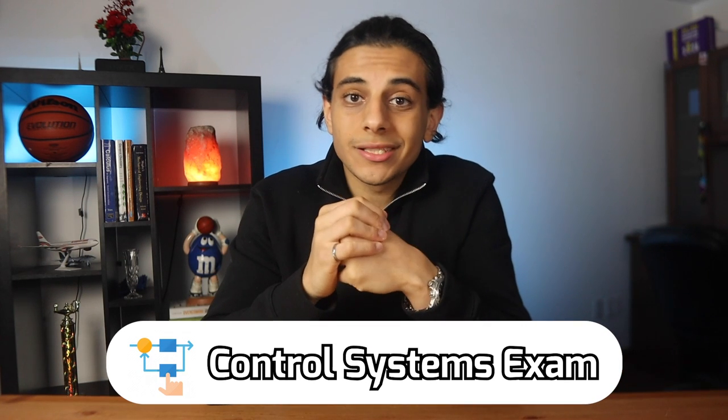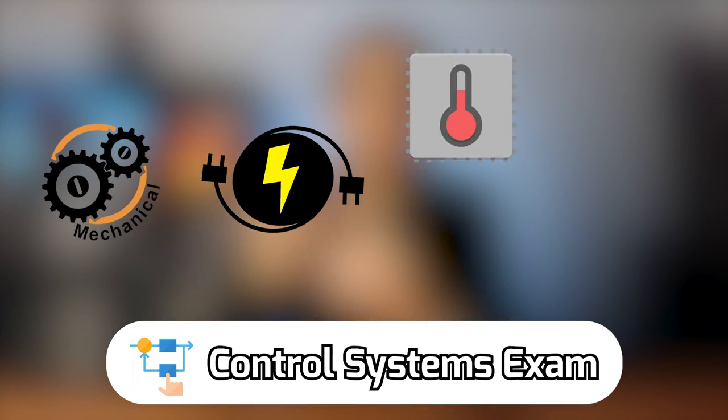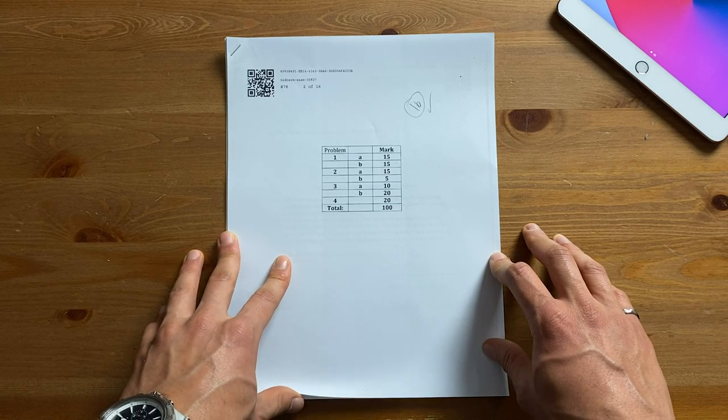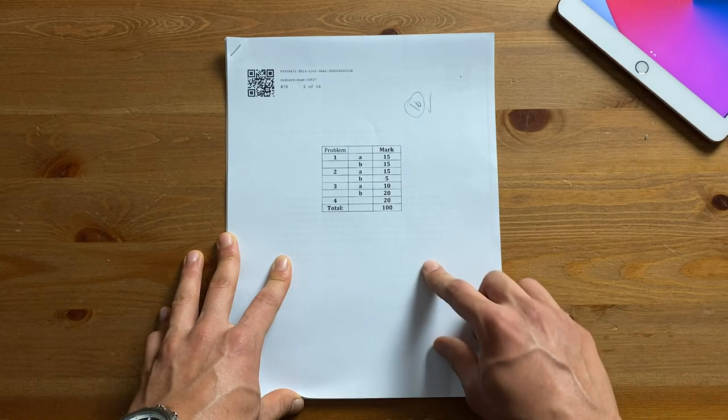Now let's have a look at my control systems exam. This course teaches us the laws that govern the mechanical, electrical, thermal and fluid control components. The exam was two hours long and was worth a total of 100 marks. This meant that I should spend about one minute for every mark. The first question was worth about 30 marks so I had to make sure I spent roughly 30 minutes on it.